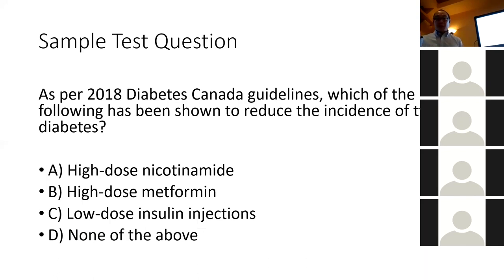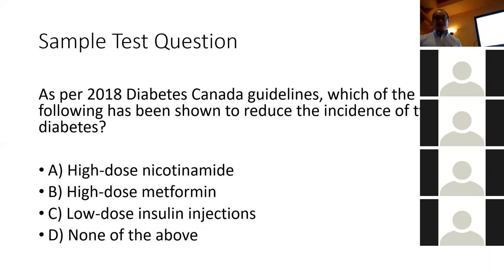Research was done trying to prevent type 1 diabetes. Nicotinamide had no effect. Low-dose metformin is ineffective with type 1 — that's usually used for type 2. Low doses of insulin had a small effect in a small subgroup, but overall it had no effect when compared to the general population.